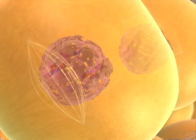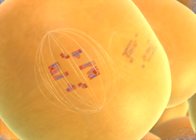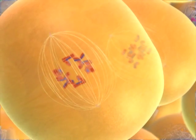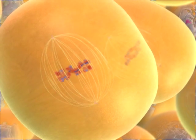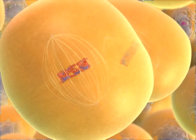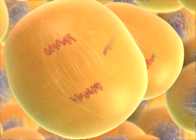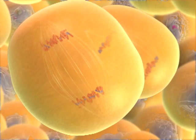In meiosis II, microtubules from opposite poles attach to the chromosomes, which then move to the center of the cell. Next, the sister chromatids separate, becoming full-fledged chromosomes that move to opposite poles.